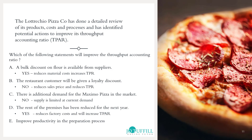Option E — improve productivity in the preparation process. Improving productivity in a process will increase throughput, but in our question the bottleneck is dough mixing, not the preparation process. It is only improving productivity in the bottleneck process that will increase the throughput accounting ratio, because the TPAR is based on the bottleneck process, not on all processes.